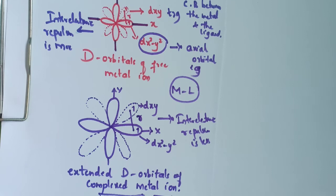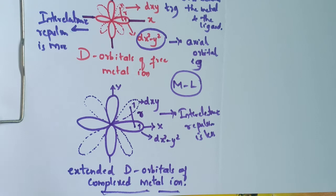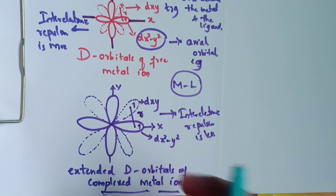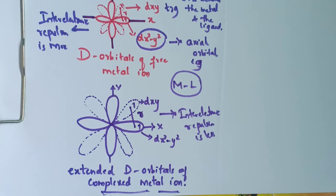When a free metal ion forms a complex, the covalent bonding decreases the inter-electronic repulsion parameters. The larger the decrease in inter-electronic repulsion, the greater is the extent of covalent bonding in complexes.